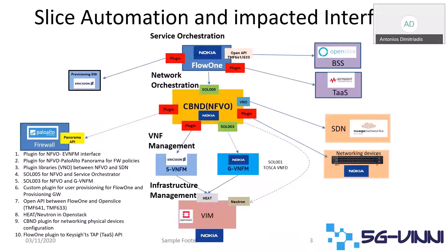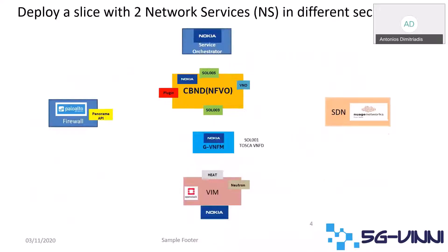Finally, we achieved one-click deployment, and that will be the demo for today. My colleague Tirta is going to show the demo from Flow1, which is a service orchestrator, and how we trigger the onboarding of this slice with two different network services under two different tenants. They cannot talk to each other by default.